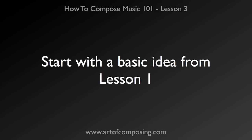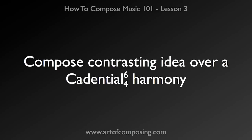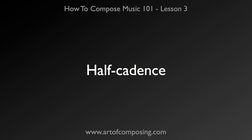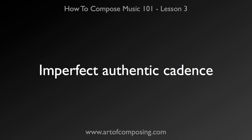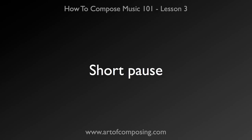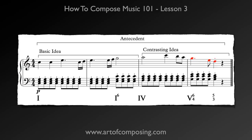For this lesson, I'm going to start with a basic idea that I composed in lesson one. Next, I'm going to compose a contrasting idea over a cadential 6-4 harmony. Remember, at the end of an antecedent phrase, we have to have a half cadence — sometimes you can have an imperfect authentic cadence, but I won't go into that for now. A quick tip for composing your cadence is that normally, at a cadence, there's also a short pause or stop in the music. This doesn't mean that all of the music stops — it normally just means that there's a pause in the melody or the surface rhythm. Listen to this example.